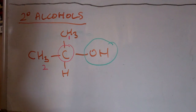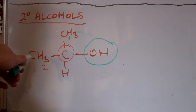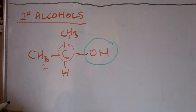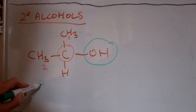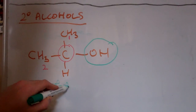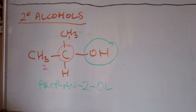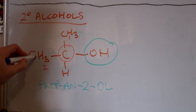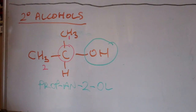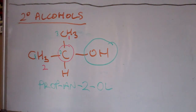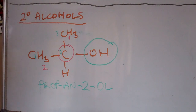We've got three carbons in the chain, so this is actually propan-2-ol, because the hydroxyl group is attached to the second carbon — one, two, three. So propan-2-ol is the secondary alcohol.